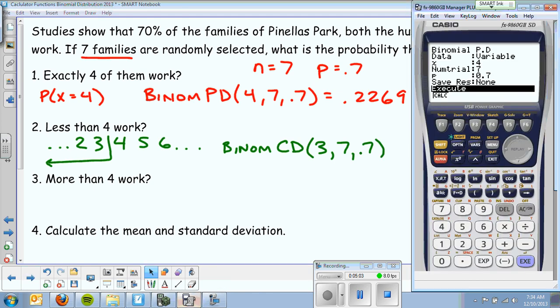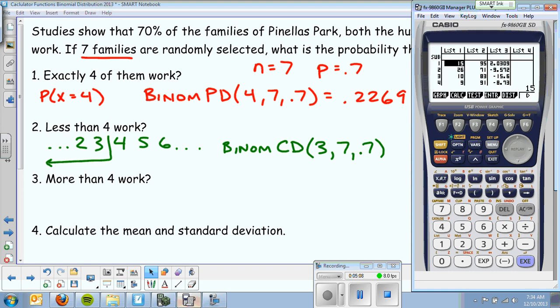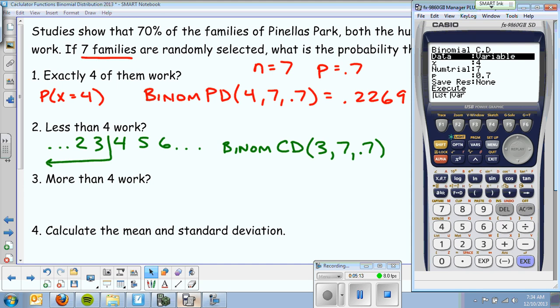So I go to my fancy Casio. Now I'm in binomial PD here. So I've got to go back, back to distribution, binomial CD. I still want variable. I want 3 or less, out of 7, 0.7. We go down to execute, and we get 0.1260.